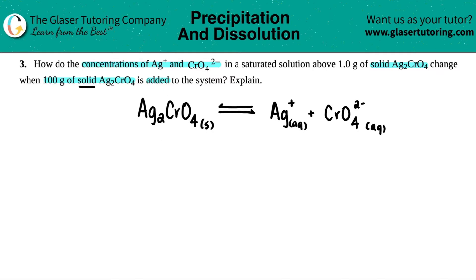Now let's just balance. Keep in mind that you had two Ags. So over here, I have to say that I have two Ags. And then the chromate, CrO4 and CrO4, that's the same. So now we're balanced.